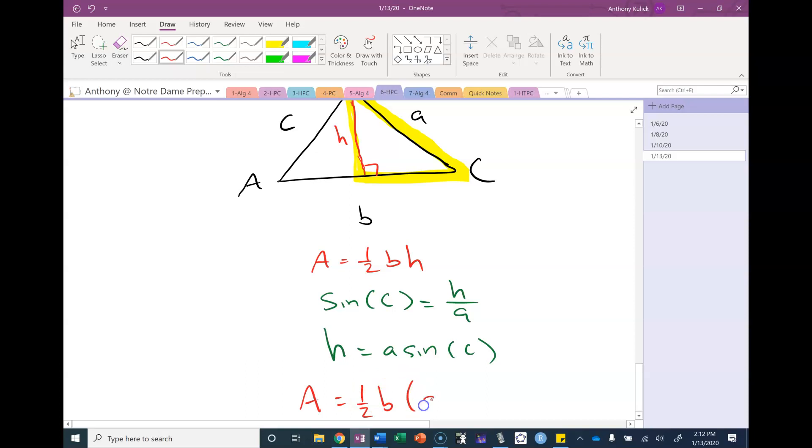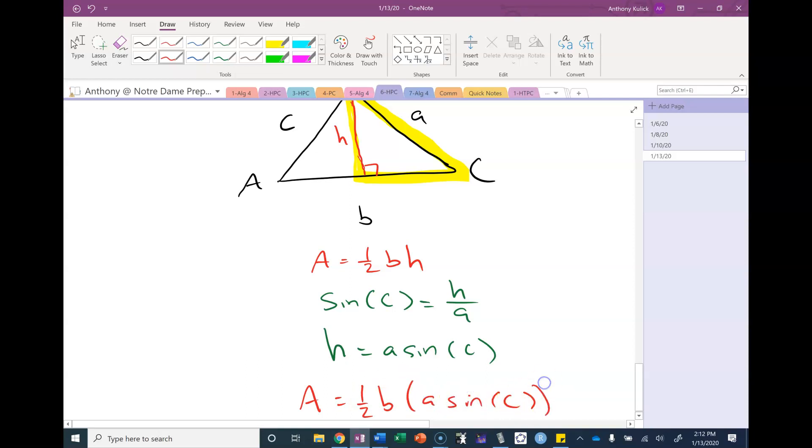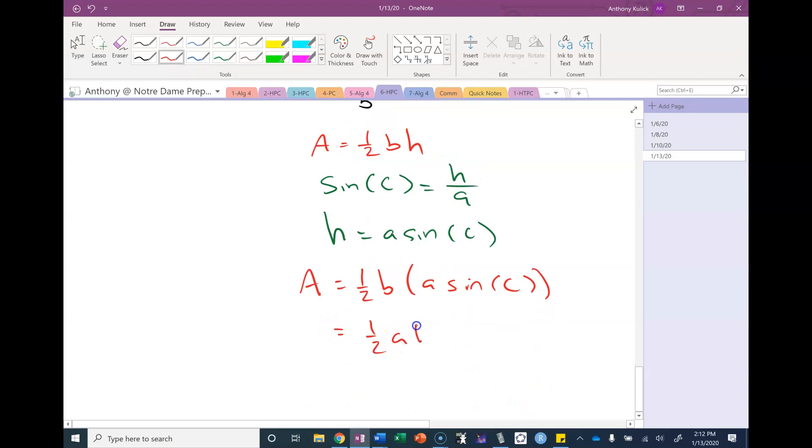When we cross multiply, we get that H is equal to A times sine C. And when I substitute that in for H in our one half base times height, we simplify down to one half AB sine C. It's really the same thing as your one half base times height. We've just found an expression for H involving an angle measure and a side length instead of the height.